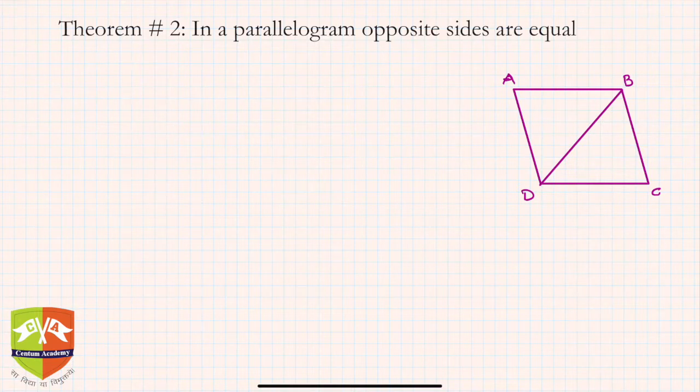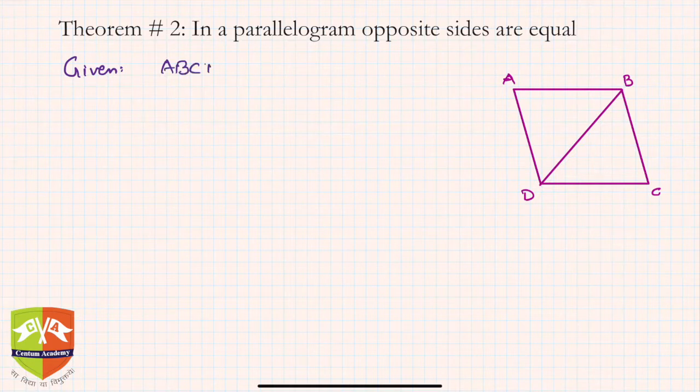How to go about it? Let's start the proof using congruence. We have joined a diagonal BD, and let's use this. As we have done already, we'll write: Given ABCD is a parallelogram.